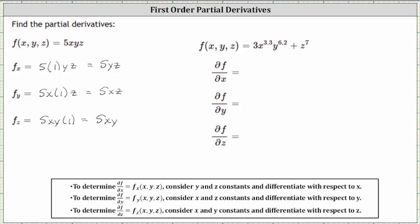For our second example, f(x, y, z) is equal to 3x^3.3 y^6.2 plus z^7. To find the partial of f with respect to x, we treat y and z as constants and differentiate with respect to x. The derivative of 3x^3.3 y^6.2 with respect to x is three times the exponent 3.3 times x to the power of 3.3 minus one, which is 2.3. Because we're treating y as a constant, we still have times y^6.2. And then we have plus the derivative of z^7 with respect to x.